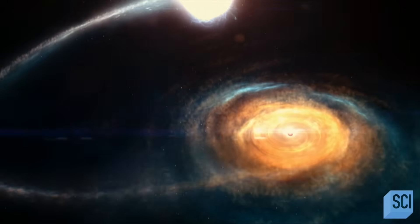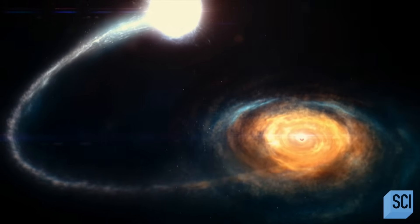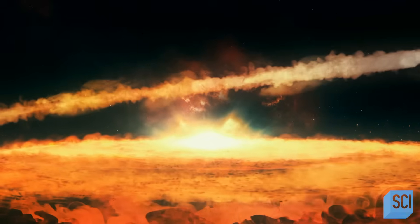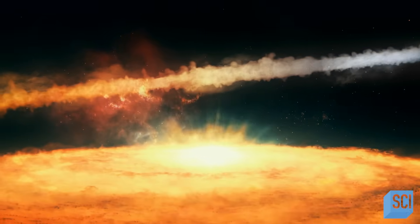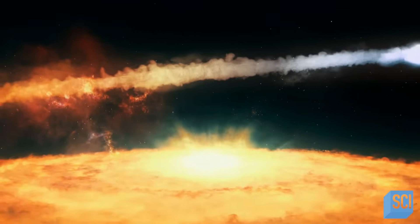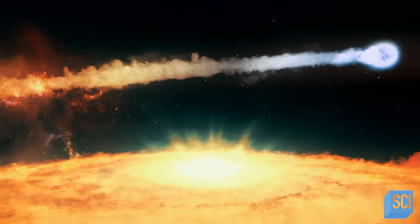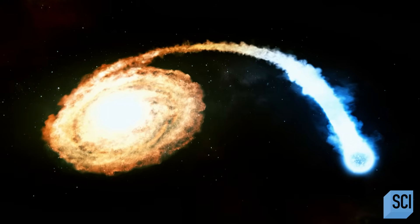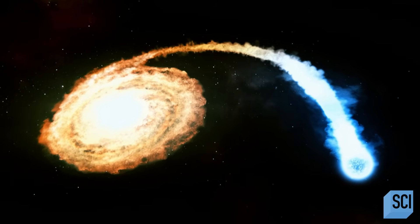This white dwarf is just a fifth of the mass of the sun. How can such a small star survive being so close to a black hole? You might think that because a white dwarf is small, it's not going to last very long because there's not that much stuff there to eat. But it turns out it's quite the opposite.